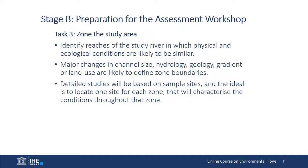Task three is zoning the study area to identify reaches of the study river where the physical and ecological conditions are likely to be similar, so they can be dealt with as particular sections for which the same flows can be recommended. Those zones are usually defined by major changes in channel size, hydrology, geology, gradient, or land use, and where tributaries come in. Detailed studies will be based on sample sites, with the ideal being to locate one site per zone that characterizes conditions throughout that zone.